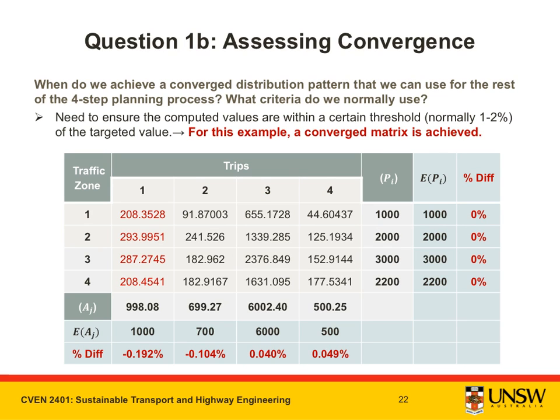This next slide shows the matrix we ended up with at the end of part A. The percentage difference is shown for all trips in red. For this particular example, a converged matrix has been achieved after just one iteration of column factoring and row factoring. This concludes the worked example for trip distribution. Thank you for watching this video and good luck with your studies.